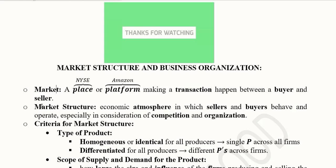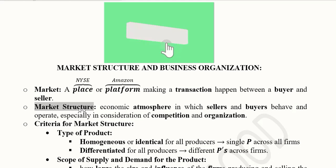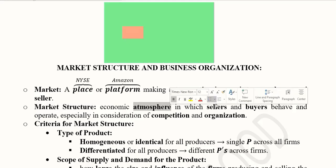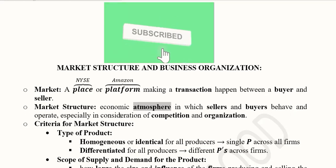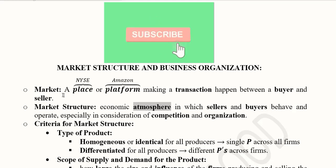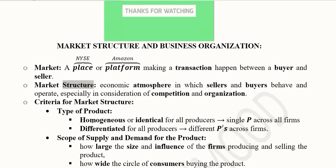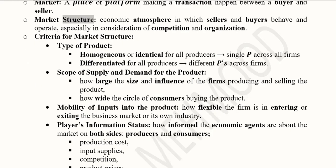When such a situation exists, we know that we're talking about a market. Market structure can be defined as the economic atmosphere in which sellers and buyers behave and operate in a certain way, considering the competition and the organization. It is an atmosphere where buyers and sellers are present, but what sort of structure exists is determined by various factors. Let's see which criteria determine the market structure.